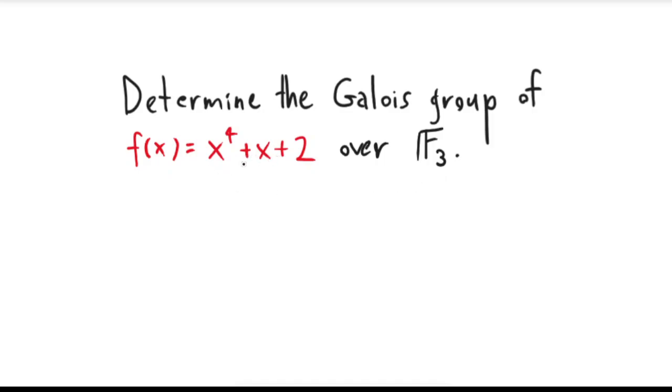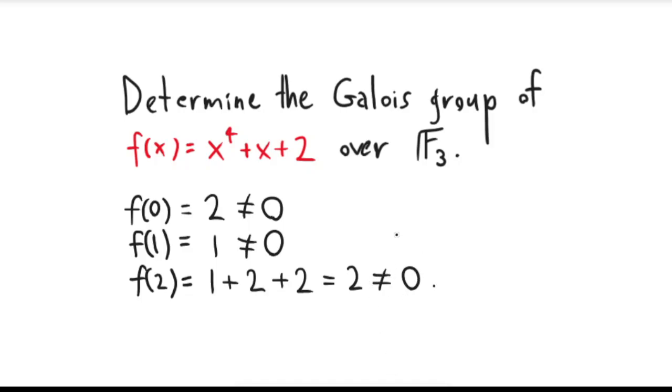So the first thing that I'm going to claim about this polynomial is that it's irreducible, and we're going to show that in the following way. So the first thing about this polynomial f(x) is that it doesn't have any roots in F_3, and it's easy to check that. How do you check it? Well, f(0) would be 0 plus 0 plus 2, so that's 2, which is not equal to 0 in F_3. Furthermore, f(1) would be 1 to the 4th plus 1 plus 2, which is equal to 1.